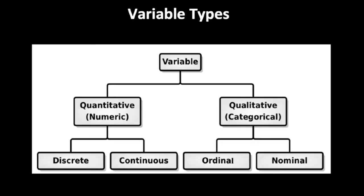Next, variable types. Variables can be divided into two groups: quantitative and categorical. Quantitative variables have two sub-groups — discrete and continuous — and qualitative variables also have two sub-groups — ordinal and nominal.